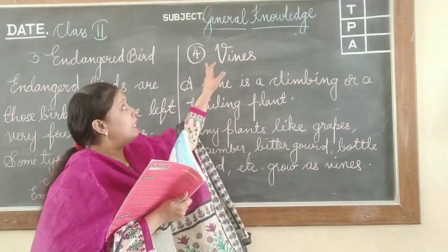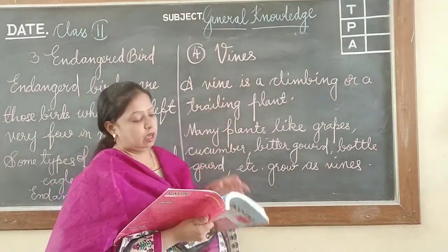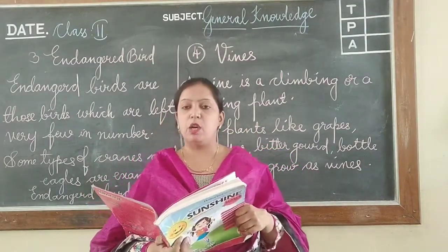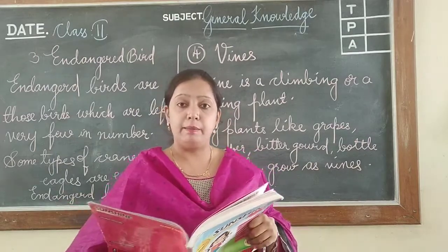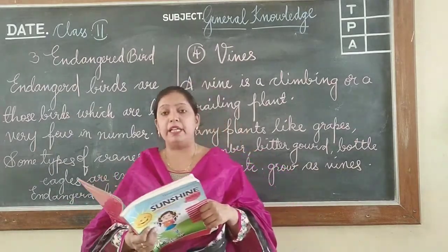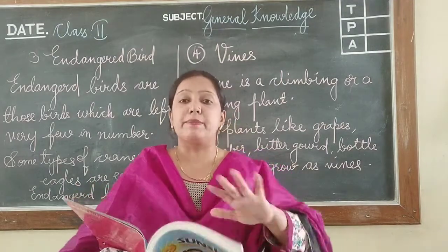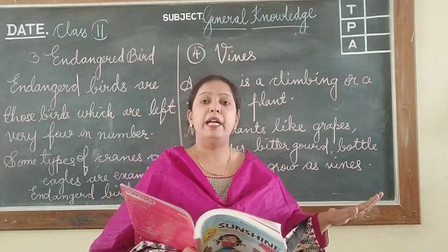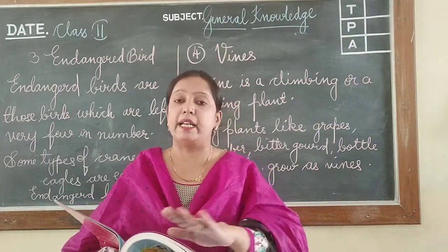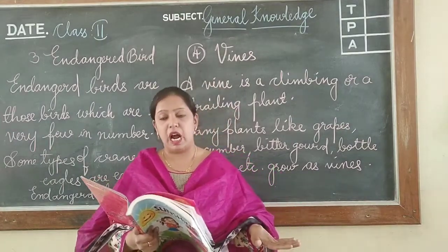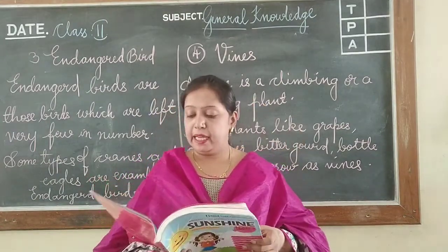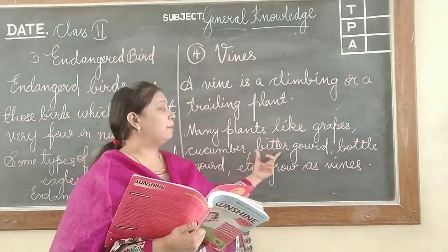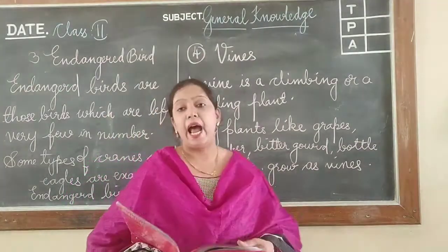Let us move to the next lesson — lesson number 4: Vines. What do you mean by a vine? A vine is a climbing or trailing plant. The stem of this plant needs support; they grow and spread on the ground. Many plants like grapes, cucumber, bitter gourd, and bottle gourd grow as vines.